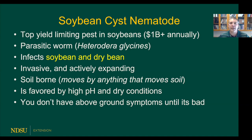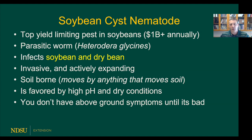It infects soybeans and dry beans; all the other crops we grow in the state are not an issue — it really is a soybean and dry bean issue. It is invasively and actively expanding. It's soil-borne, so it moves by anything that moves soil. It's favored by high pH and dry conditions. One of the most important things if you're out west is that you don't have to have above-ground symptoms until it's pretty bad — typically a 15 to 30 percent yield hit before you start to see stunting and yellowing. It's kind of a sleeper.